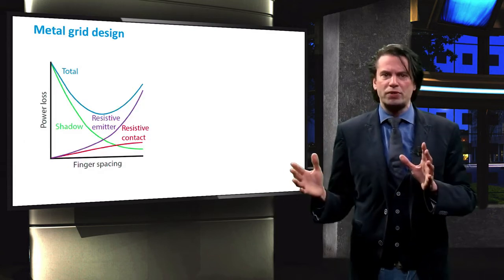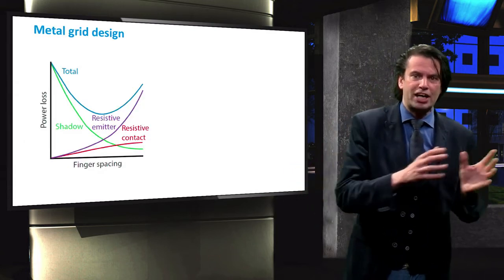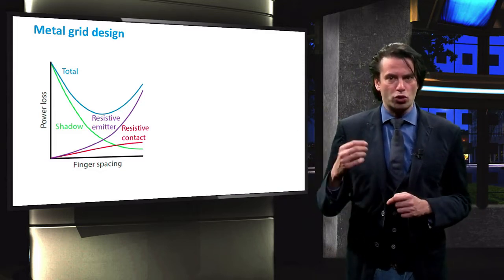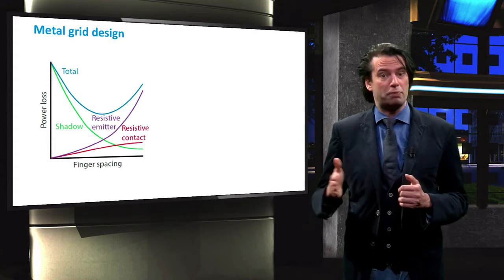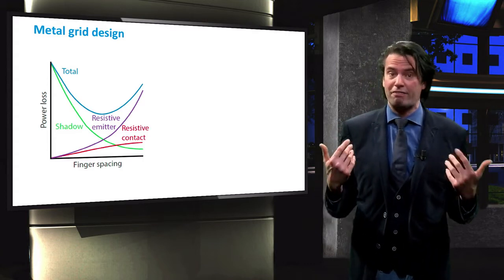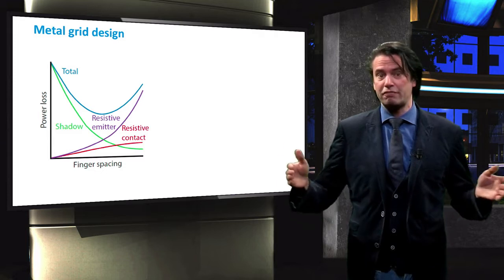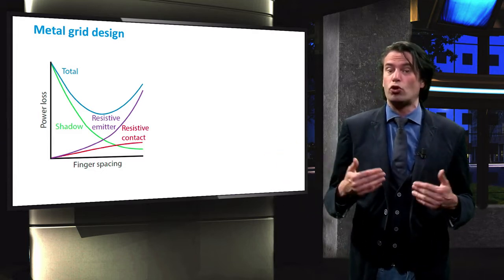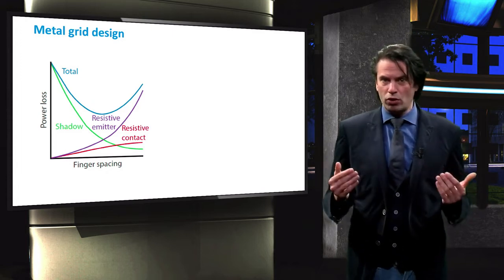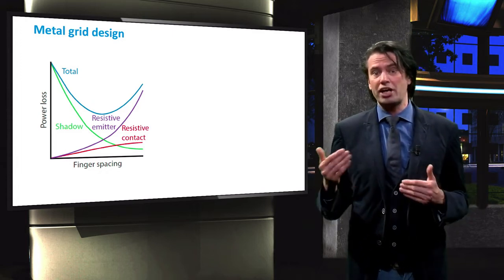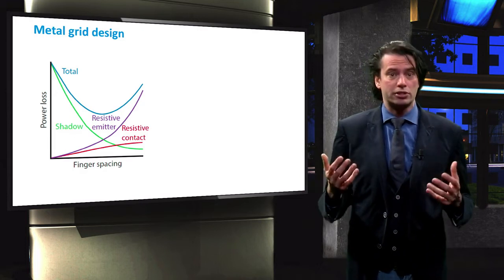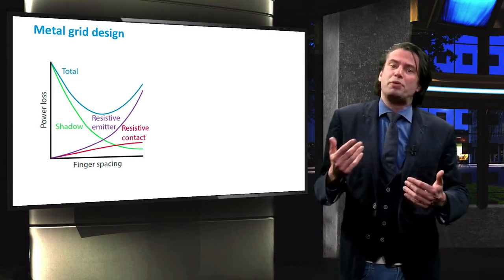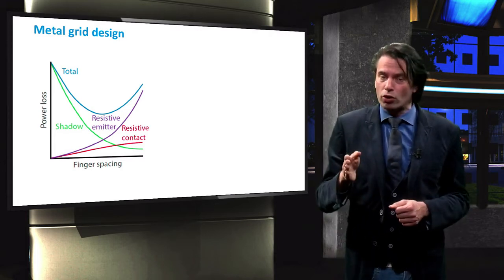This trade-off between the resistance of the fingers and the shading of the fingers is shown in this graph, where the power loss of the solar cell is plotted against the finger spacing. We can see several competing effects. With increasing finger spacing, the power losses decrease because of less shading, but power losses increase due to the increased resistance in the metal layer and contacts. Hence, there is an optimal spacing distance at which the power loss is minimal.